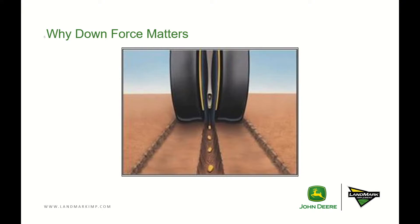Too little downforce is going to cause row unit hop and poor ride quality. The openers could even rise out of the ground, resulting in poor ground contact and improper firming of the seed furrow, or varying seed depth across rows.